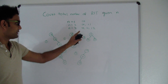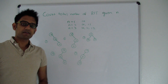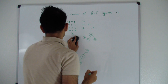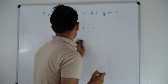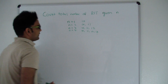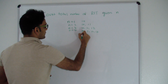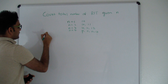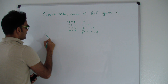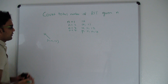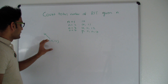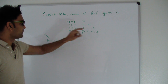Now let's see what happens when n is 4 with keys 10, 11, 12, and 13. When 10 is the root, everything else — 11, 12, 13 — goes on the right side. We already know how many trees we can form with those 3 remaining keys, because that is the n=3 case, which gives us 5 trees.